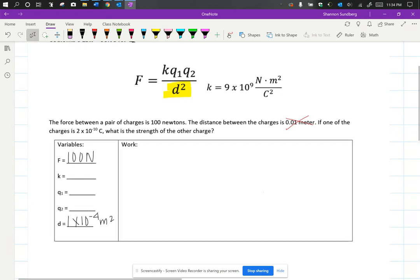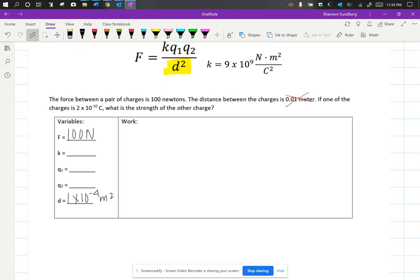They told us that the first charge is 2 times 10 to the negative 10th. They're asking us what's the strength of the other charge. So I don't know what Q2, what the strength of that charge is. The other blank line there is that constant K value, and I gave it to you at the top of the page. So 9 times 10 to the 9th.